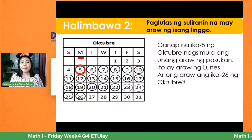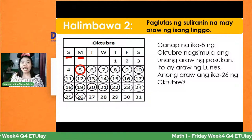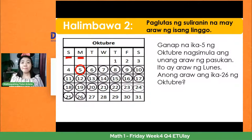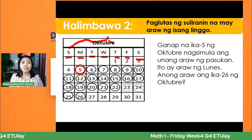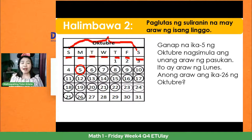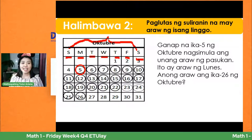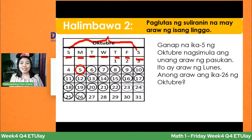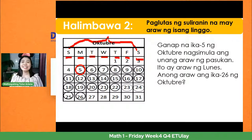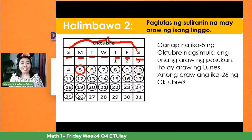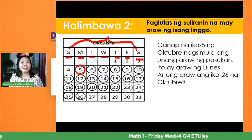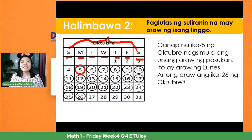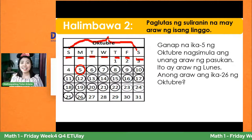Ang araw sa isang linggo ay pito. Una ay Linggo o Sunday. Sa English: Sunday, Monday, Tuesday, Wednesday, Thursday, Friday, and Saturday. Sa Tagalog: Linggo, Lunes, Martes, Merkules, Webes, Biernes, Sabado. Nagsimula tayo ng Lunes ang araw ng Oktobre 5. Anong araw daw ang ika-26 ng Oktobre? At ito ay nakatapat din sa araw ng Lunes.